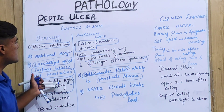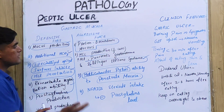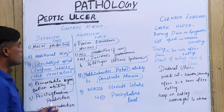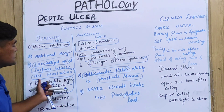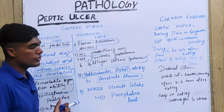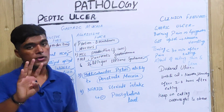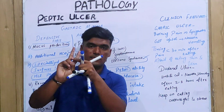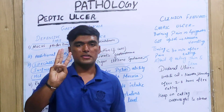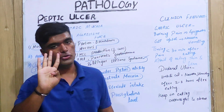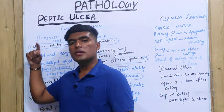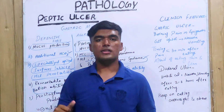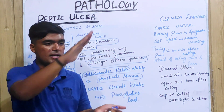To summarize the key parameters: mucus production, HCL, regeneration ability, and prostaglandin — in the case of defensive forces, these are increased; in the case of aggressive forces, they are decreased.